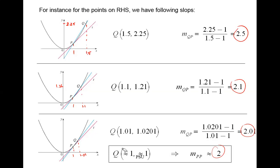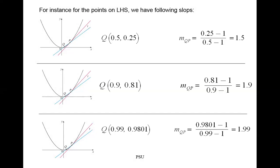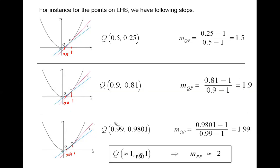Point Q cannot actually reach point P — that is the limiting position. My limit is 1. I can be at 1.00001, still not 1, but almost. The slope of the tangent is 2. Doing the same from the left side: x = 0.5 gives slope 1.5, x = 0.9 gives slope 1.9, x = 0.999 gives slope 1.999. Approaching 1 from either side, the slope approaches 2.